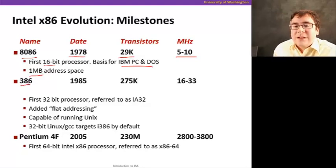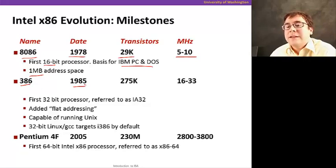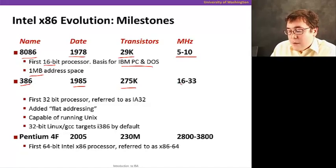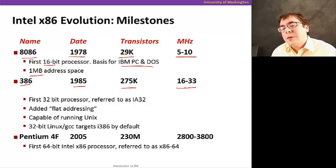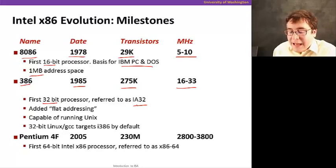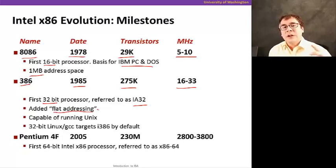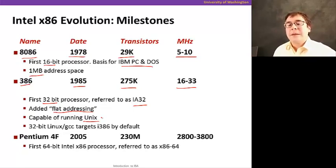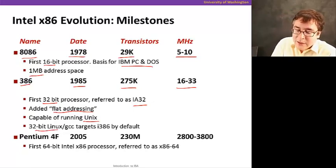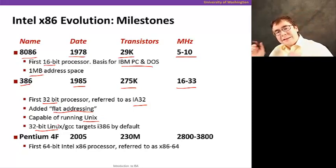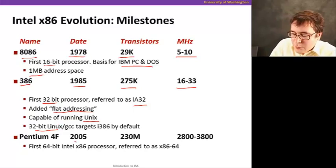But, and then another major step was the 386 that was introduced in seven years later in 1985. And it had 10 times as many transistors. It ran about three times faster in terms of its clock's frequency. But it was significant for a number of things. It was the first 32-bit microprocessor. It was referred to as the IA32. It had a flat addressing mode. Meaning that you didn't have to divide the memory into regions called segments and address them individually. You had a single address that could point anywhere in memory. So, that made the process of managing memory and accessing memory much, much simpler. So, and this machine is also capable of running an operating system called Unix, which is very similar to what we call Linux today. And so, it's very similar. Linux is a type of Unix operating system. And today 32-bit Linux GCC targets, targets the 386 by default. So, 386 is a very, very important architecture as well.